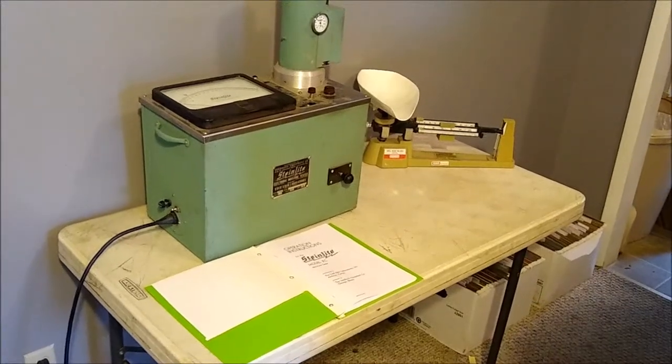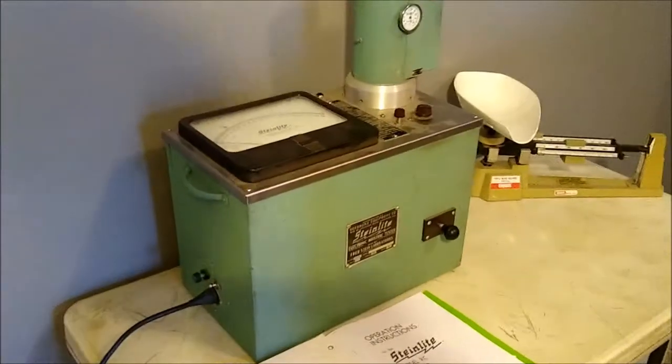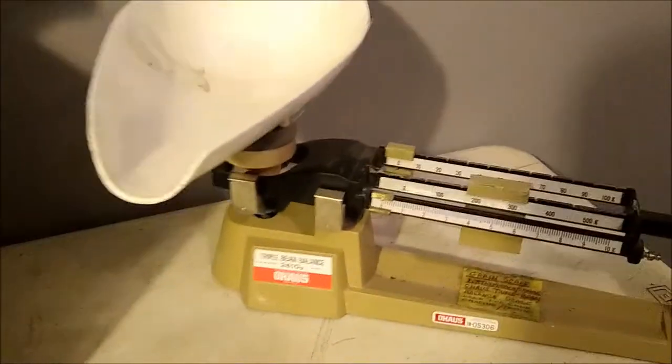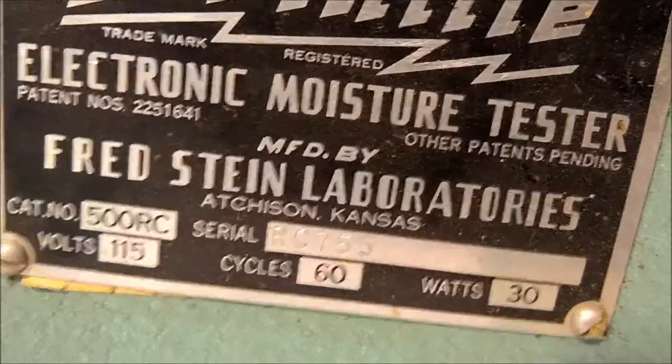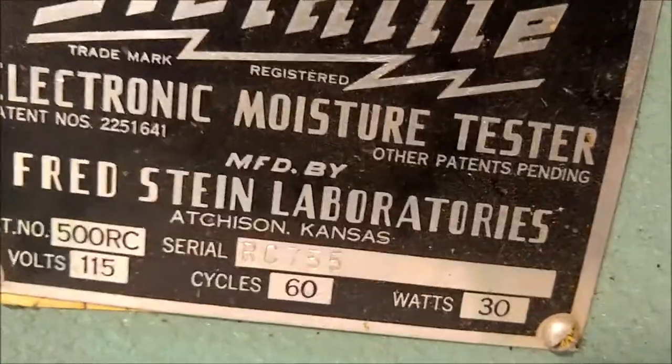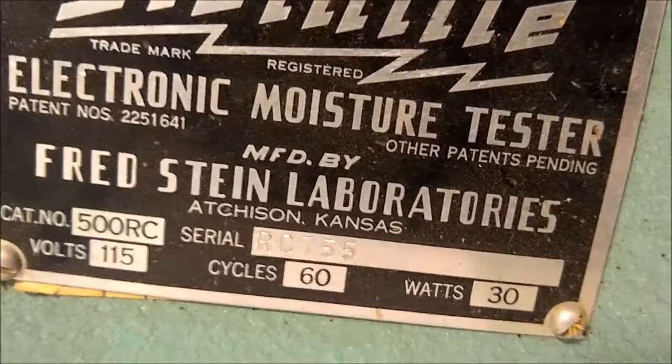Today we are looking at a Steinleit model RC moisture tester and an OHAS triple beam scale. The serial number on this moisture tester is RC755. It is a 115 volt single phase unit.